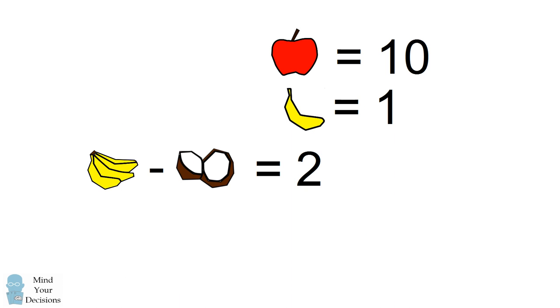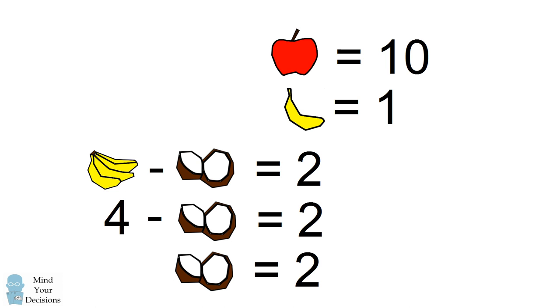We now have the equation that four bananas minus a full coconut is equal to 2. So we have 4 minus the coconut equals 2. We can solve this to get that the coconut is equal to 2.